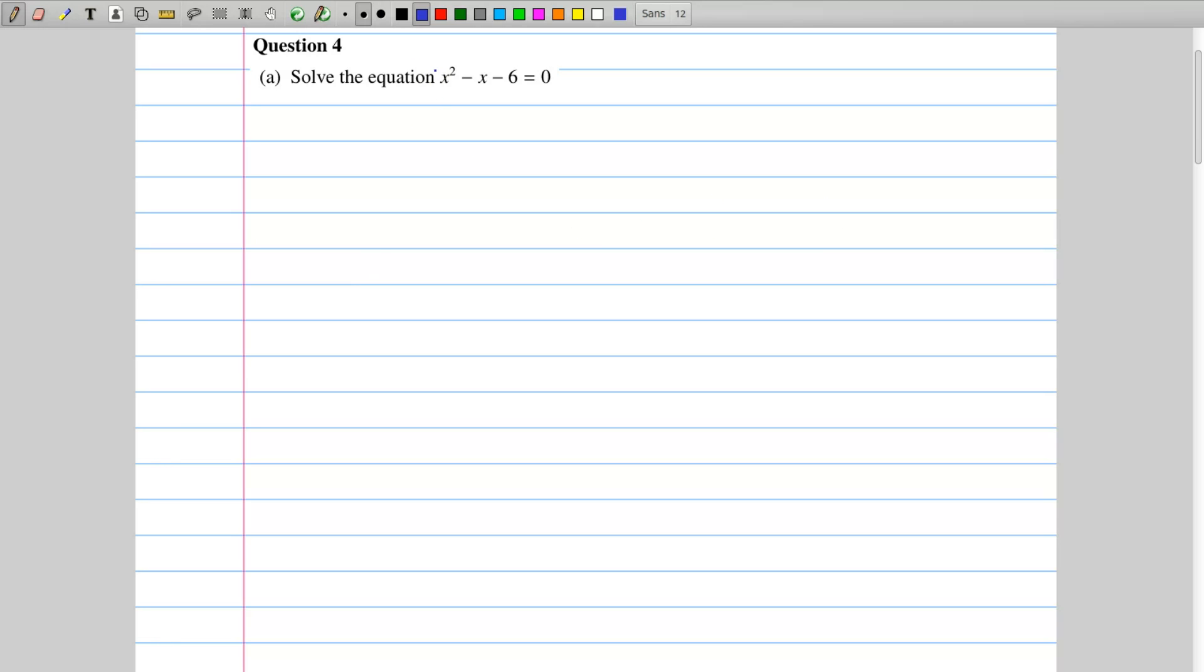So I take a look at the coefficient of x squared, which in this case is a 1. If you don't see a number there, it means it's a 1. And I do a little aside, and I multiply the coefficient of x squared, that is a 1, and I multiply that by the constant, which is a minus 6, which just gives me a minus 6.